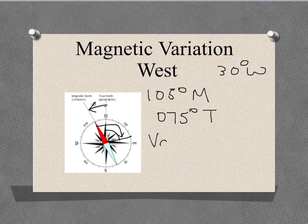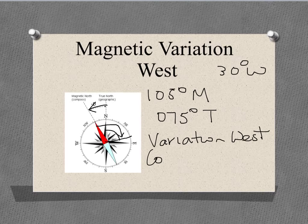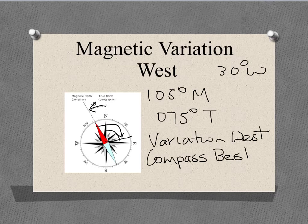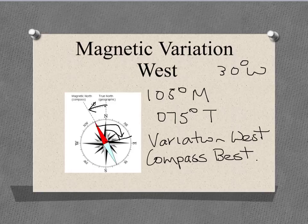We can use our rhyme to help us remember this comparison: variation west, compass best. This rhyme reminds us that if we are in a region where the magnetic variation is to the west, then our compass bearing will always be larger than the true bearing.